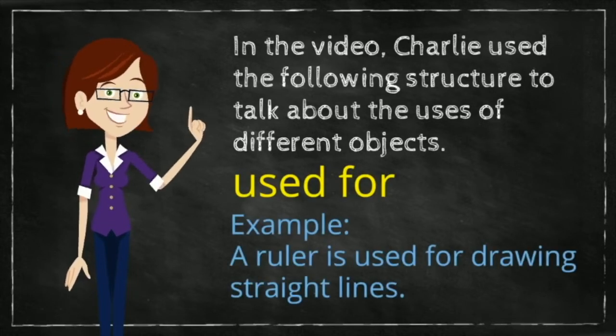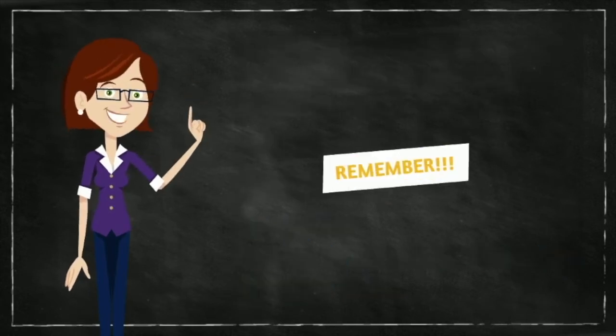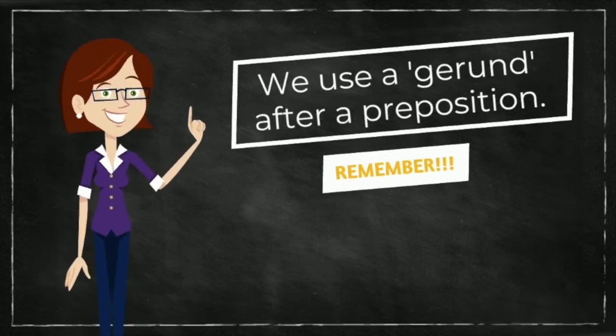For example, a ruler is used for drawing straight lines. It is used for drawing. We use a gerund after a preposition.